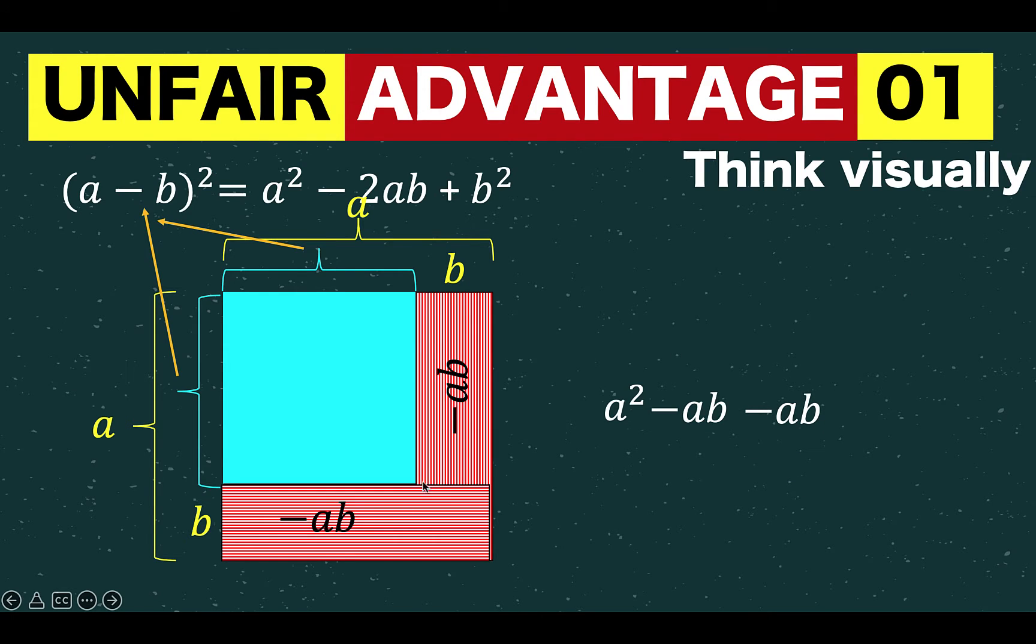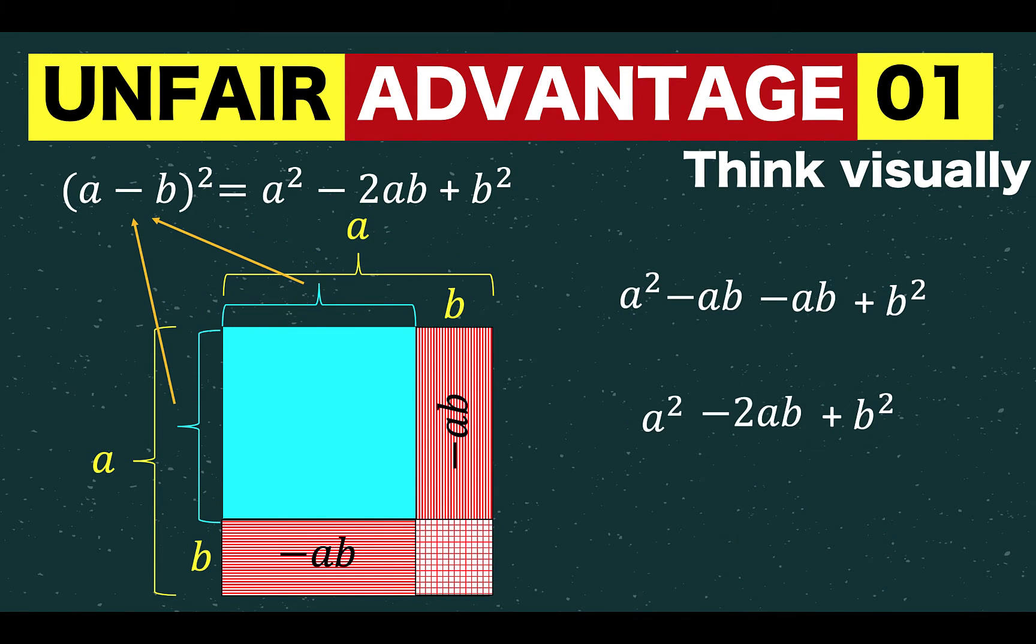But wait a minute! Notice that we counted this area twice because that's already computed in the first rectangle, and that's computed again in the second rectangle. So we need to return back this part that was counted twice. And so we need to add that part that was subtracted twice. And we now have this plus b squared. And simplifying this, we arrive at a squared minus 2ab plus b squared, which is now this right side of the equation.